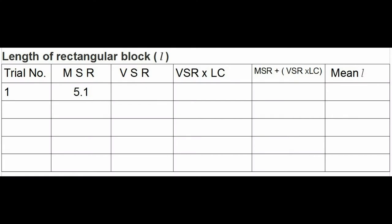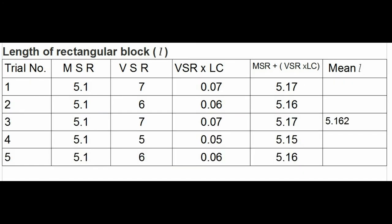Now, we write down in tabular column, MSR equals 5.1 and VSR equals 7. Next, VSR multiplied by least count. So, 7 multiplied by 0.01 equals 0.07. Next, MSR plus VSR multiplied by LC. That is, simply add these two columns. Which means 5.1 plus 0.07 gives 5.17 cm. Yes, this is the length we measured. We repeat the same process 5 times and find out the average length.